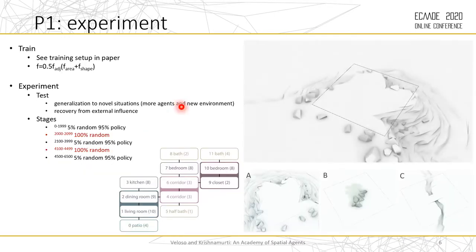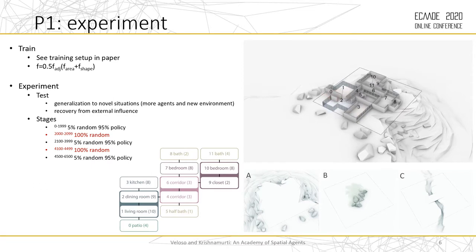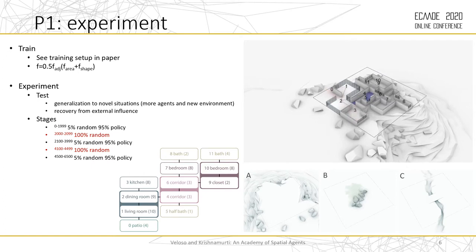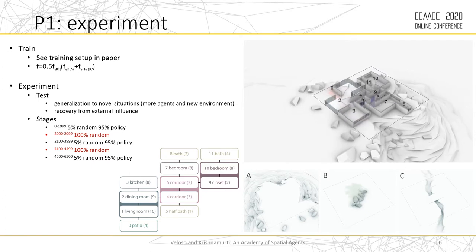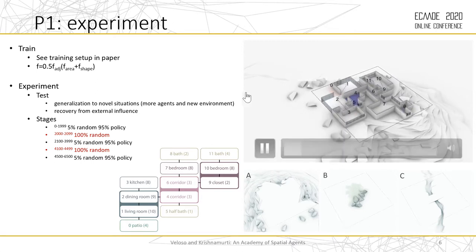In terms of our experiment, we trained six agents, six spatial agents in randomly generated environments. We use this specific function here to combine the adjacency, area, and shape. You can see more details of the training setup in the paper. After training, we want to evaluate if these agents are able to generalize their knowledge to novel situations. If the model, the knowledge in the model that we use to select actions, which we call policy, if this can be generalized to an environment with more agents and also different characteristics.